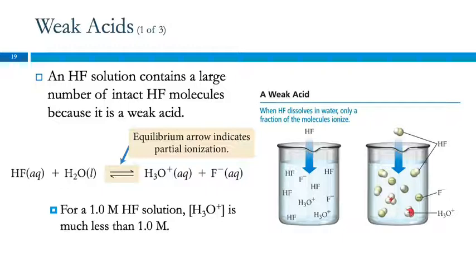HF is a weak acid, hydrofluoric acid. When it dissolves in water, it does ionize, forms some hydronium ions and some fluoride ions, but there are also a lot of HF molecules that are intact. And so when we write the equation for this, we use an equilibrium arrow showing the reaction going in both ways. This indicates it's a partial ionization.